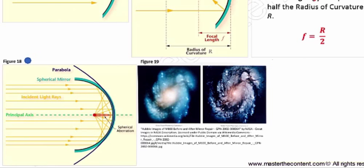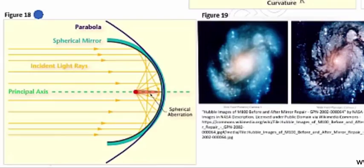If we come back over here to figure 18, aberrations can be reduced by making the mirror only a small fraction of the sphere. Furthermore, the best type of mirrors are parabolic mirrors, which can be used to eliminate spherical aberration. However, they are more difficult to construct.